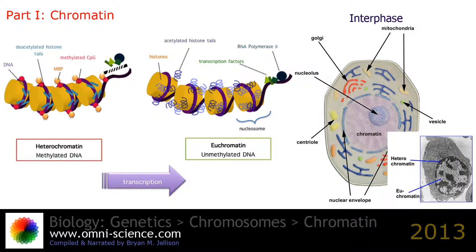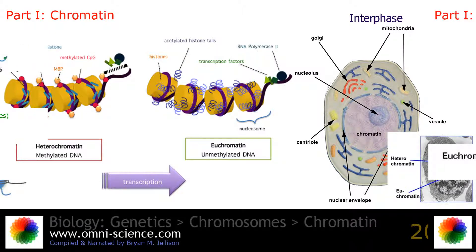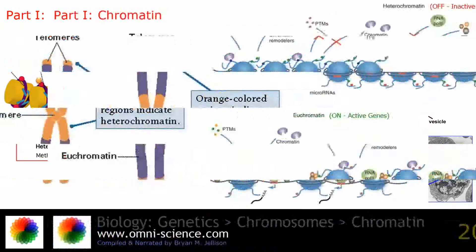The structure of chromatin depends on several factors. The overall structure depends on the stage of the cell cycle. During interphase, the chromatin is structurally loose to allow access to RNA and DNA polymerases that transcribe and replicate the DNA. The local structure of chromatin during interphase depends on the genes present on the DNA.